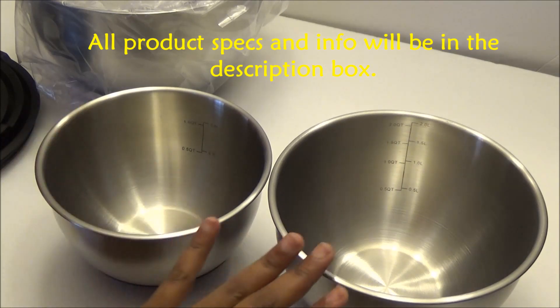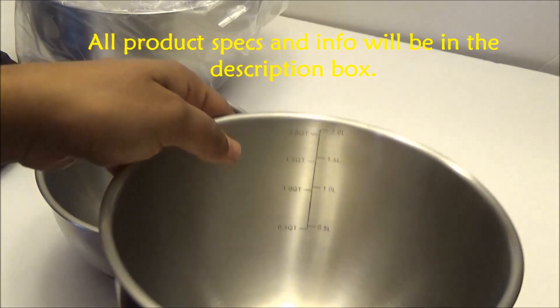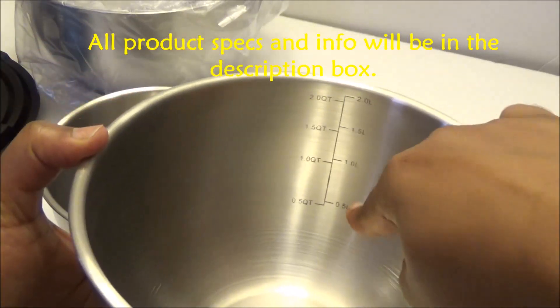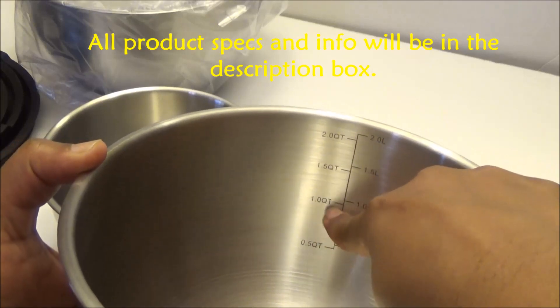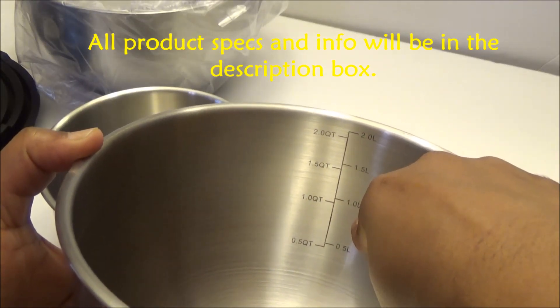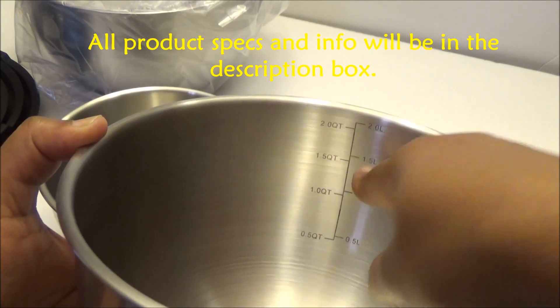Now these come in different sizes and they also have measurements on the inside if you can see. So you have 0.5 quart (0.5 liters), 1 quart (1 liter), 1.5 quart (1.5 liters), and 2 quart (2 liters).